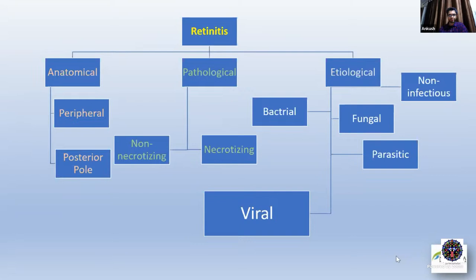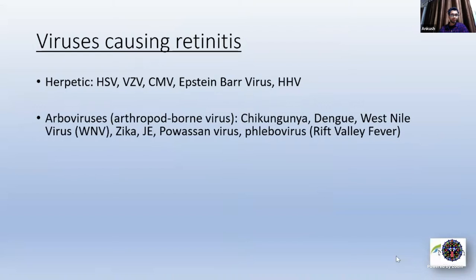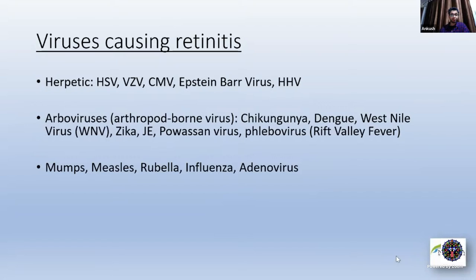There are a lot of viruses, the most common being herpetic viruses: herpes simplex, varicella zoster, CMV, and rarely Epstein-Barr as well as HHV — human herpes viruses. There is another group of viruses which are arboviruses — arthropod-borne viruses — like chikungunya, dengue, West Nile virus. These will come as an epidemic and you will have clustering of retinitis cases. Other groups include mumps, measles, rubella, influenza, and rarely adenovirus. And recently, COVID-19.